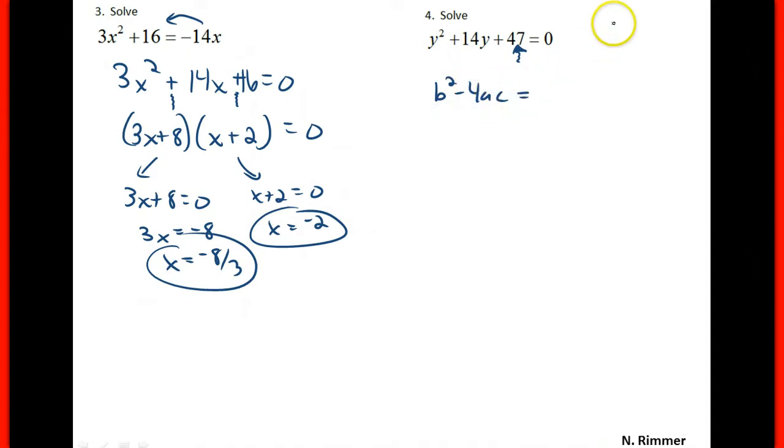b is 14, 14 squared is 196, 196 minus 4 times 1 times 47, 47 times 4 is 188. So we have 196 minus 188, and we end up with 8.